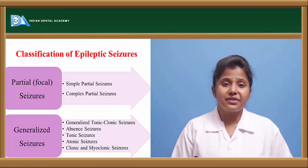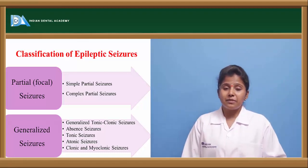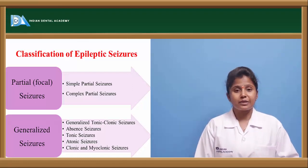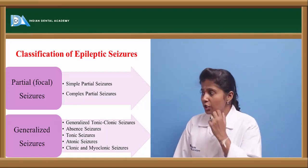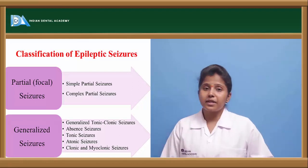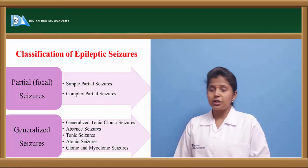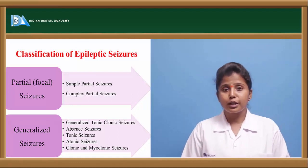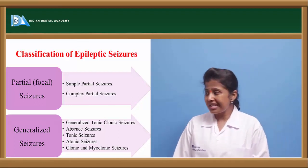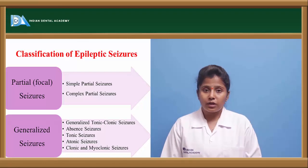Epileptic seizures are divided into partial or focal seizures and generalized seizures. Partial seizures are further divided into simple partial and complex partial seizures. Generalized seizures are categorized into generalized tonic-clonic seizures, absence seizures, tonic seizures, atonic seizures, clonic seizures, and myoclonic seizures.